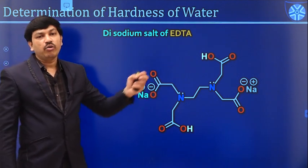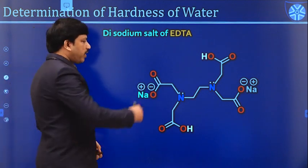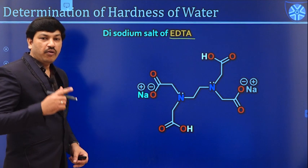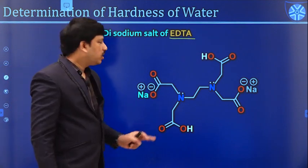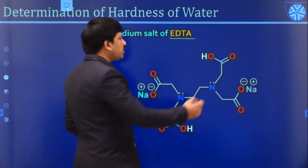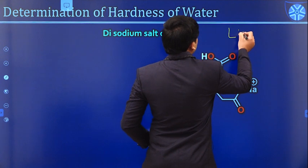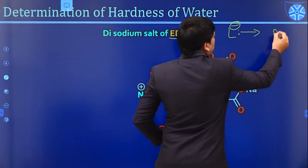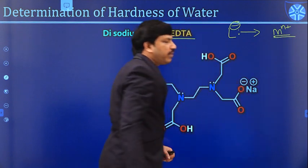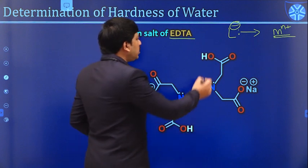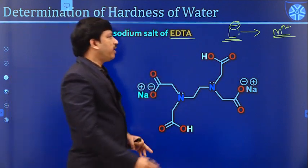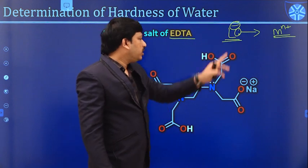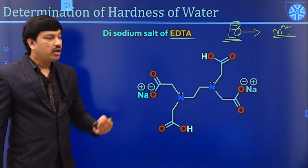Disodium salt of EDTA is useful for estimating the amount of calcium and magnesium ions in a given water sample because EDTA acts as a very good complexing agent — that is, it acts as a ligand. A ligand always contains lone pairs of electrons or negative charges that can be donated to metal centers. Metal centers have empty orbitals, and ligands donate electrons to them. Similarly, the EDTA molecule acts as a very good ligand or complexing agent.